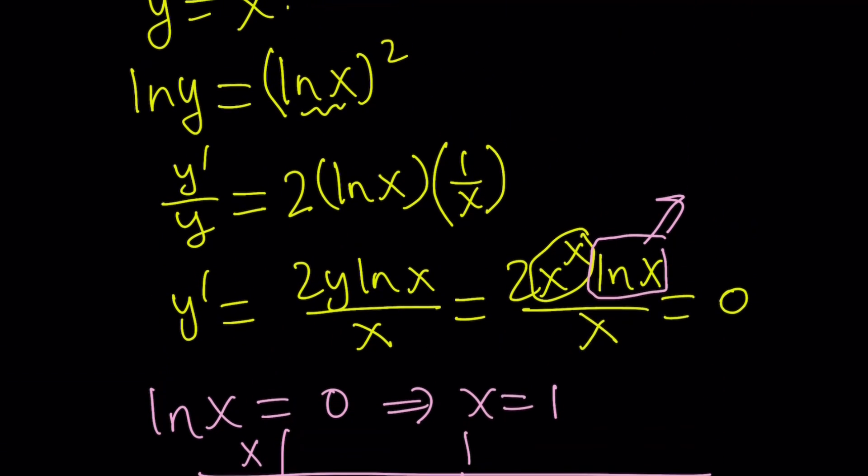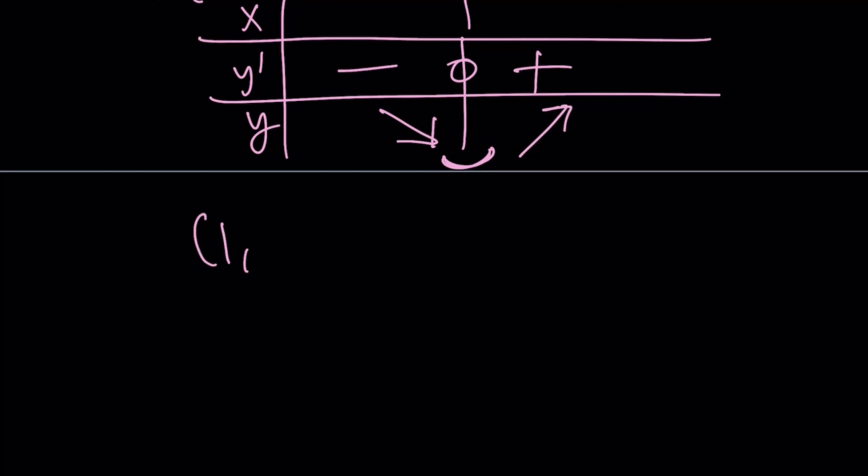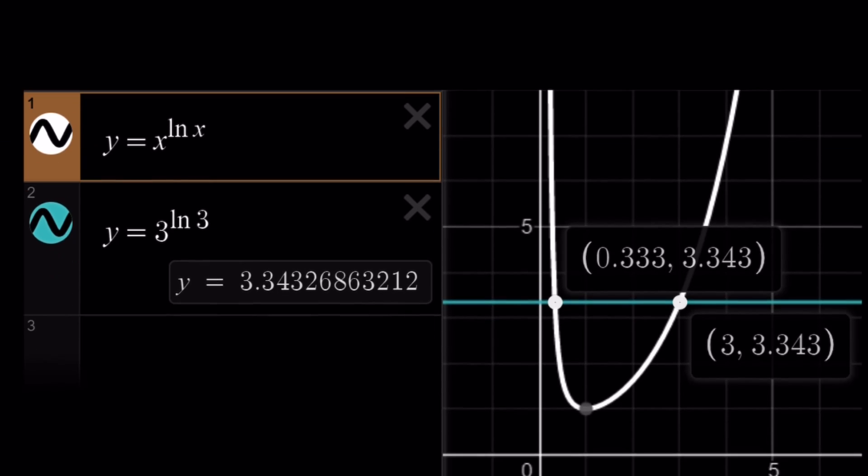And if you plug in 1 for x, you're going to get a 0. So, 1, 0 is going to be a minimum for the function. I'm going to show you the graph of the function so you'll have a better idea. And that way, you'll get a much better view than what I was talking about. Okay, here we go.